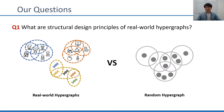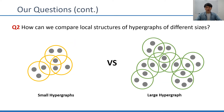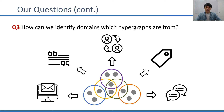In this work, we propose tools for answering three interesting questions. First, what are structural design principles of real-world hypergraphs? Specifically, what are structural properties that differentiate real-world hypergraphs from random ones? Next, how can we compare local structures of hypergraphs of different sizes, and define measures that can directly compare hypergraphs of different scales? Lastly, how can we identify domains which hypergraphs are from? Real-world hypergraphs are expected to have different structural characteristics depending on their domains — how can we capture such structural patterns that distinguish hypergraphs by their domains?